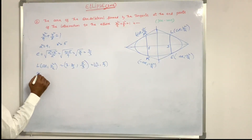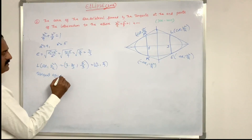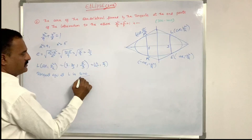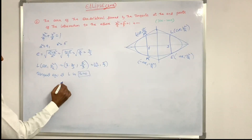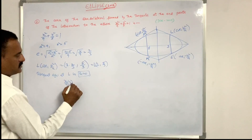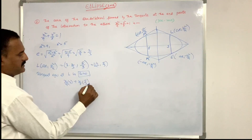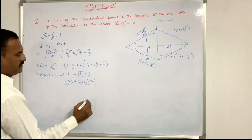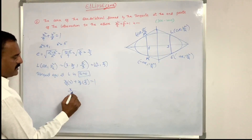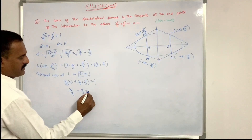Therefore the tangent equation at L is S₁ = 0, that is (x/9)(2) + (y/5)(5/3) = 1. Simplifying: 5/5 cancels, giving 2x/9 + y/3 = 1.